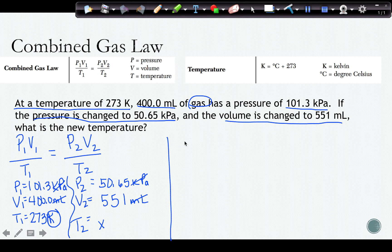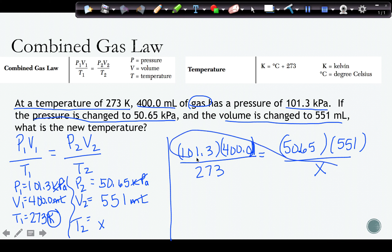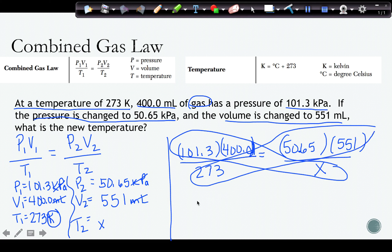Once I have that information, I plug those numbers into the formula in their corresponding positions. Once I have this, I have two fractions set equal to each other. So I can cross multiply and set the two sides equal to each other.